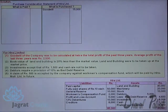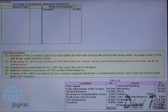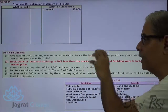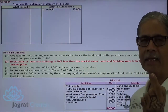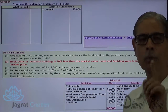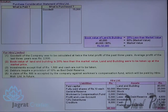Next important point: the book value of land and building is 20% less than market value, which means book value equals 80% of market value. The book value is 40,000, so: 40,000 divided by 80% gives a market value of 50,000. Therefore, land and building are purchased at a price of 50,000.